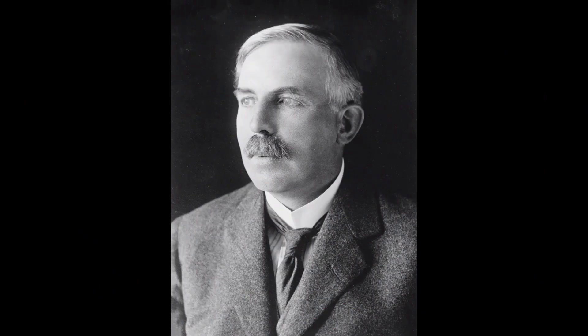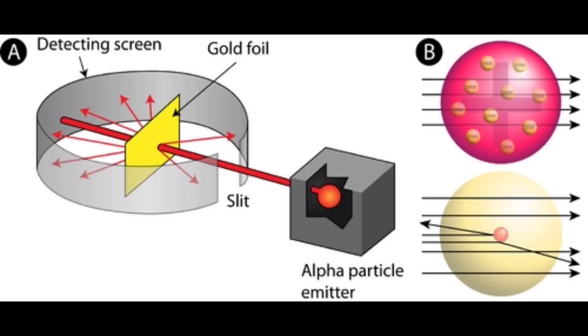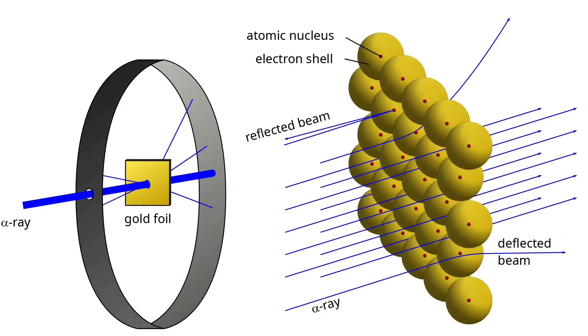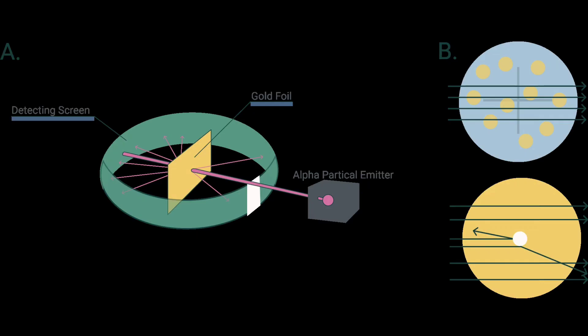Rutherford and his students Hans Geiger and Ernest Marsden in 1911 performed alpha particle scattering experiment in which they bombarded very thin gold foil with alpha particles. Rutherford in his experiment directed high energy streams of alpha particles from a radioactive source at a thin sheet of 100 nanometer thickness of gold in order to study the deflection caused to the alpha particles. He placed a fluorescent zinc sulfide screen around the thin gold foil.